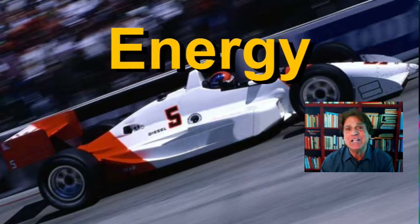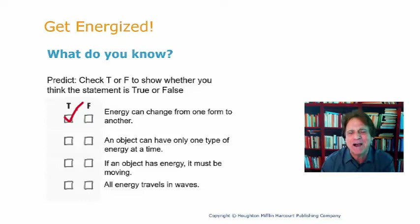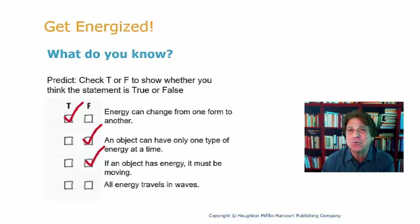Before we get into the topics of this lesson, let's see what you already know. Look at these statements and decide if they are true or false. Energy can change from one form to another — that is true. An object can have only one type of energy at a time — that is false. If an object has energy, it must be moving — also false. And all energy travels in waves — energy can travel in other ways besides waves, so that is also false.